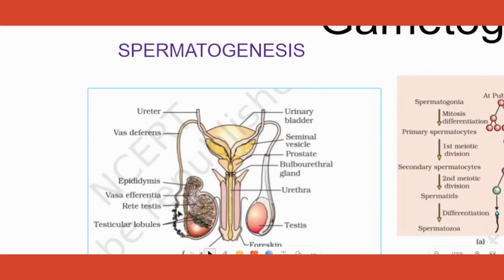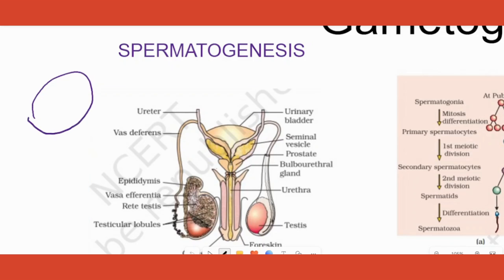Till the embryonic stage, or till the boy reaches puberty, nothing of that sort happens — that is, no sperm production happens. During puberty, the part called testis, which is an oval-shaped structure — two of them — have inside them compartments. Inside each compartment there are certain tube-like structures. This is the overview of the testis with many compartments, and inside them are these tubular structures which are the site of sperm production.